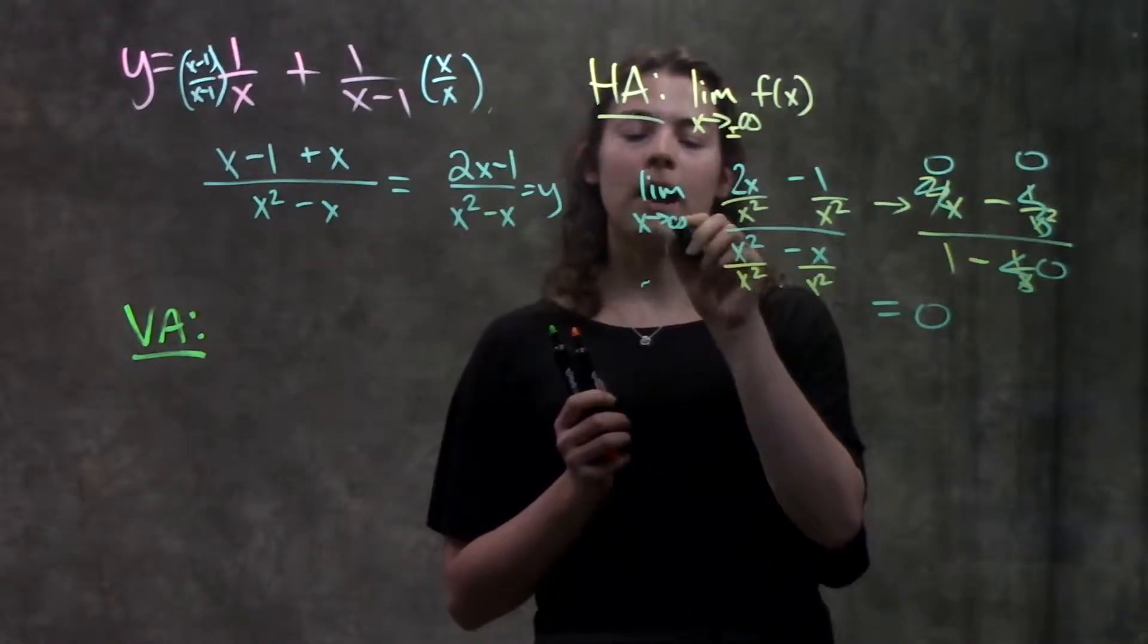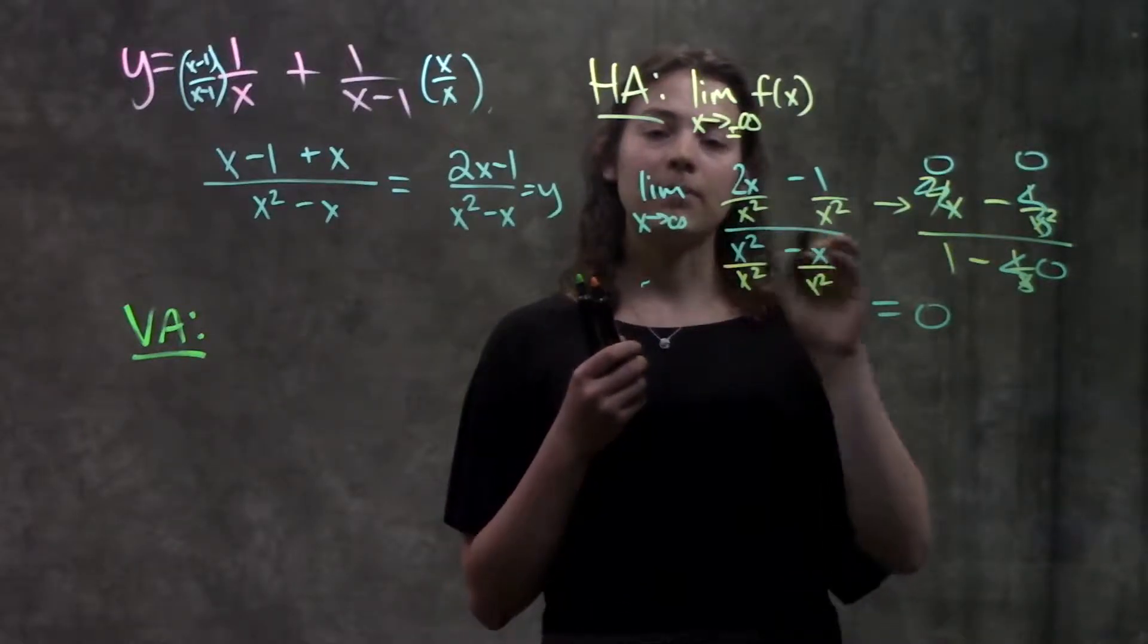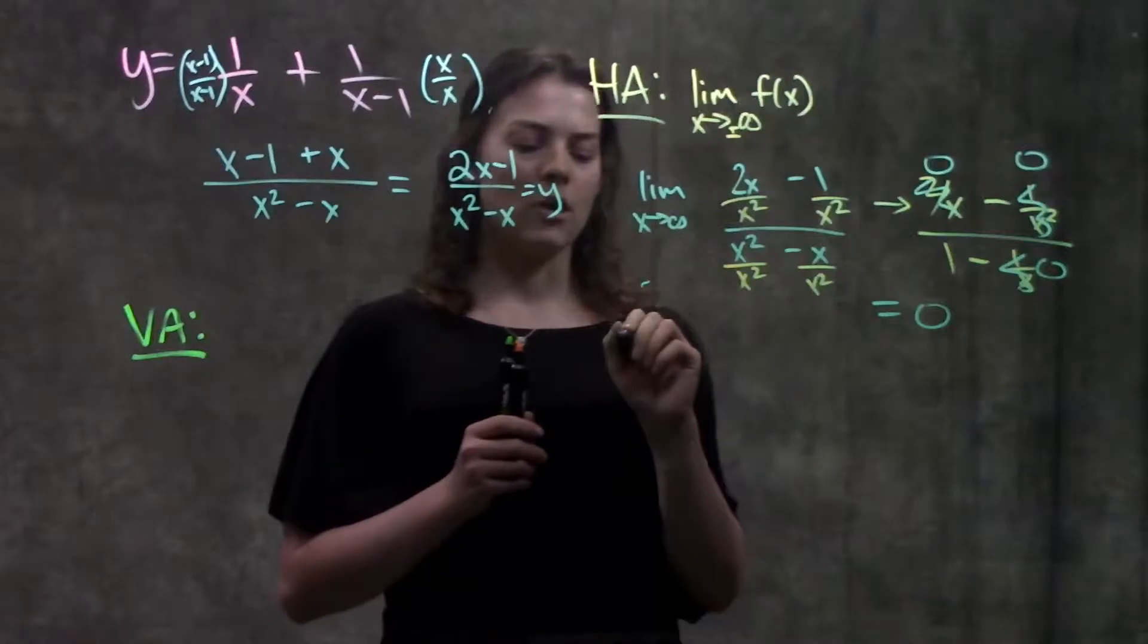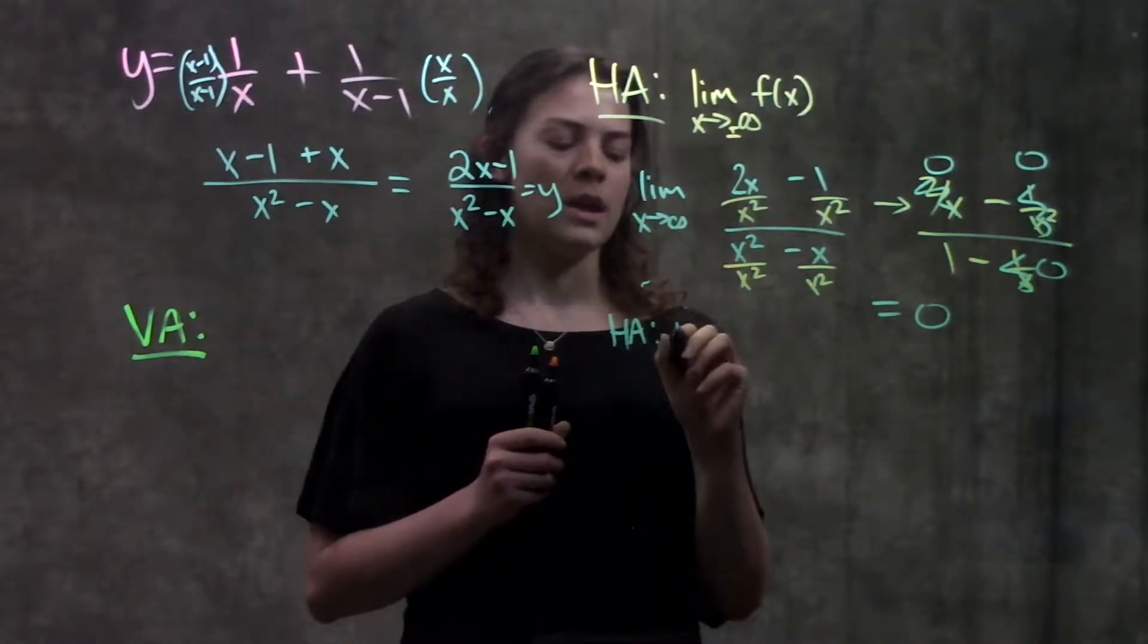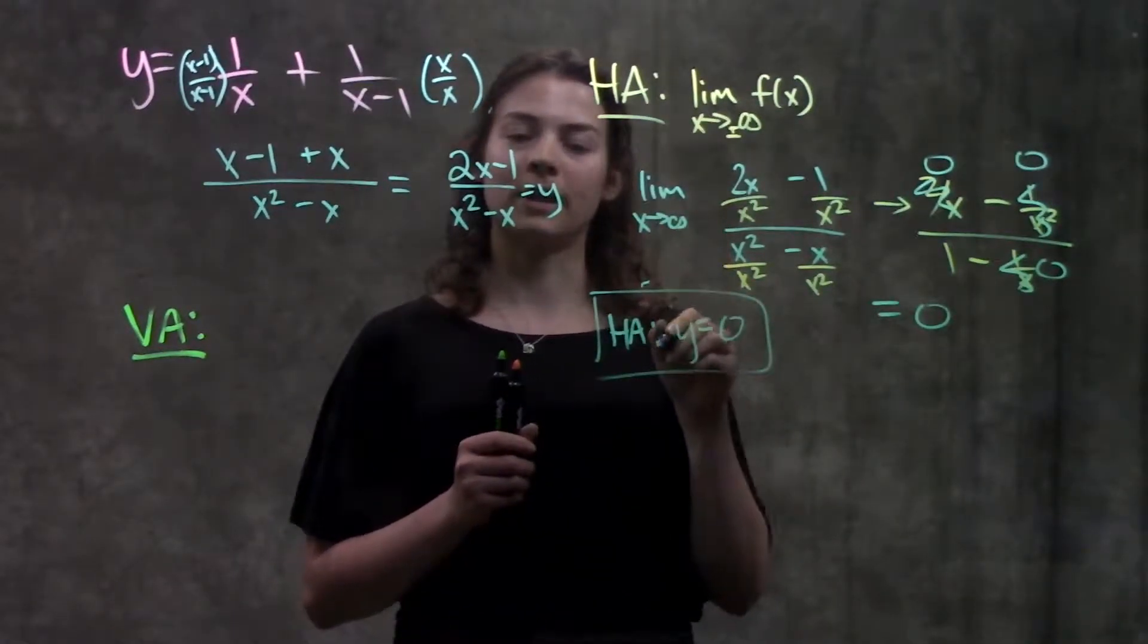And if I were to go through both positive infinity and negative infinity I'd end up having the same process and I'd have the same answer in the end just 0. So for both positive and negative infinity I have the horizontal asymptote of y equals 0. Okay horizontal asymptote is done.